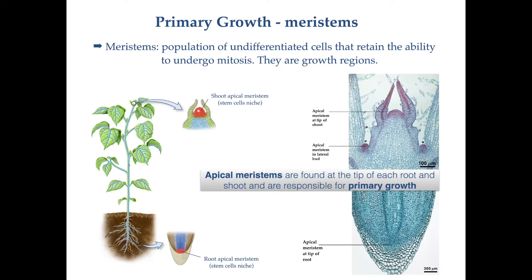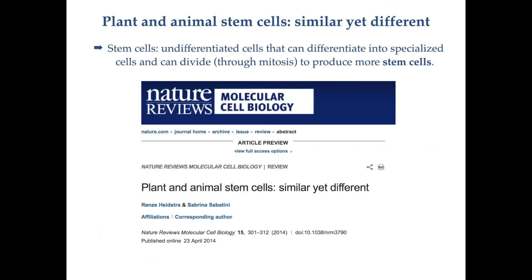Meristems are populations of cells that retain the ability to divide. The cells present in meristems are parenchyma cells — since parenchyma retains the ability to divide, we can expect meristematic cells to be parenchyma. They are undifferentiated and not committed to any specific cell fate yet. Apical meristems are found at the tip of each root and shoot and are responsible for primary growth — the very first type of growth in a plant body.